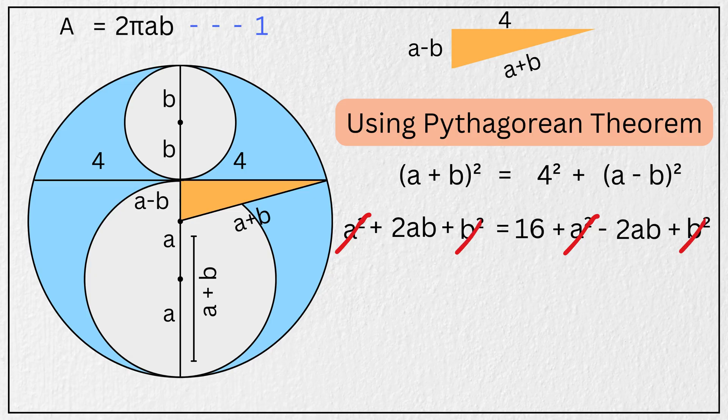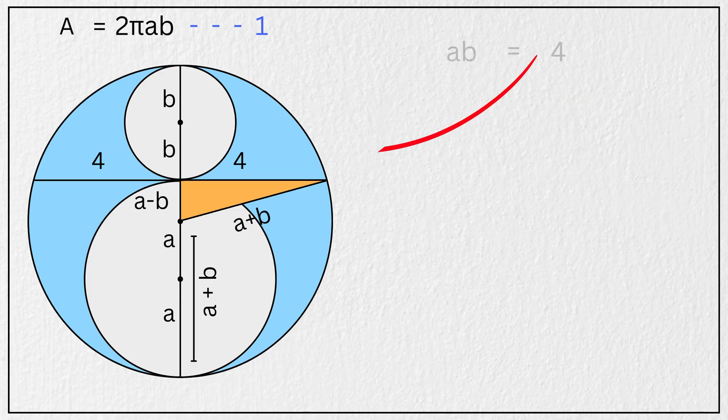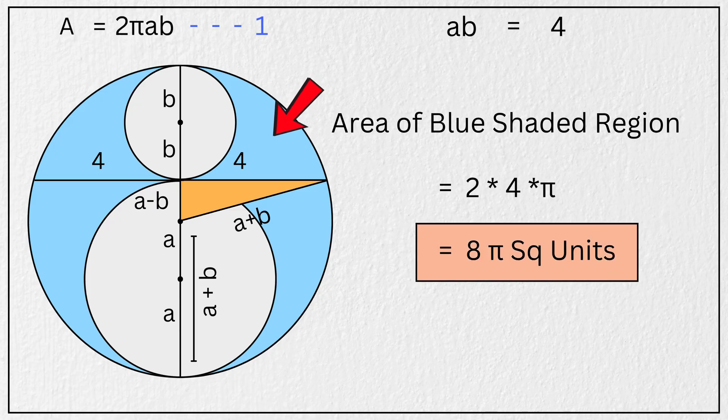And canceling A squared and B squared from both sides, we have 2AB equals 16 minus 2AB. Adding 2AB to both sides, we get 4AB equals 16. Dividing both sides by 4, we find AB equals 4 units. So substituting AB equals 4 into our area formula from equation 1, we get area of the blue shaded region equals 2 times 4 times π, which equals 8π square units. That is our answer for method 1.